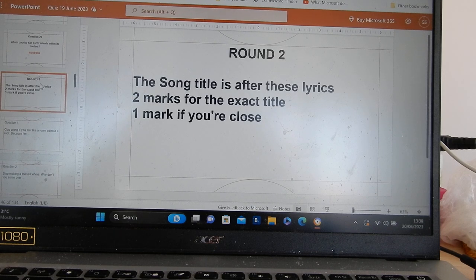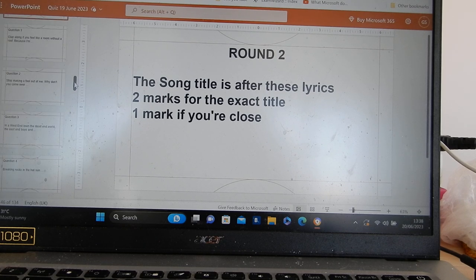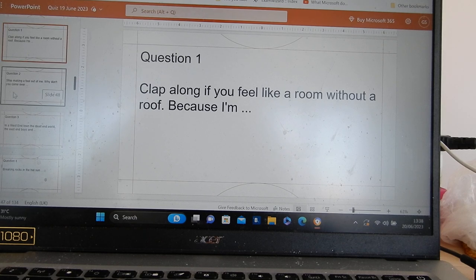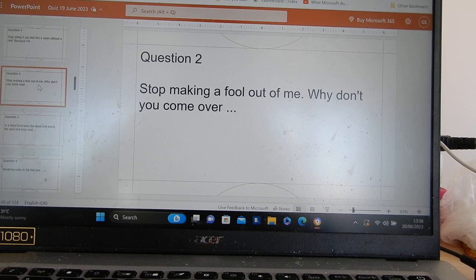Round two. The song title is after these lyrics. Two marks for the exact title. One mark if you get it close. Clap along if you feel like a room without a roof. Because I'm. That was the easy one to start. Stop making a fool out of me. Why don't you come over?